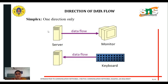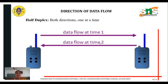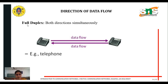Now we go to data flow. In simplex data flow, data flows in only one direction — for example, from server to monitor, or keyboard to CPU. In half duplex, data flows in both directions but only one at a time — the real-time example is the walkie-talkie. In full duplex, data flows in both directions simultaneously — the real-time example is the telephone.